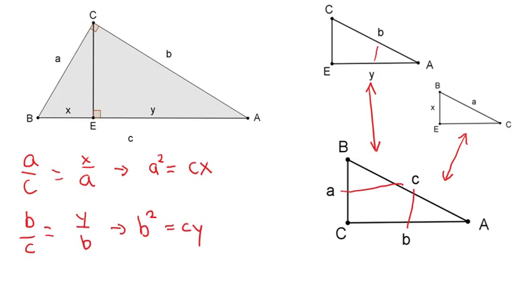Now I'm trying to say something about a² + b². Well, here's a² and here's b². So I'm going to add those together. So a² + b² equals cx + cy.